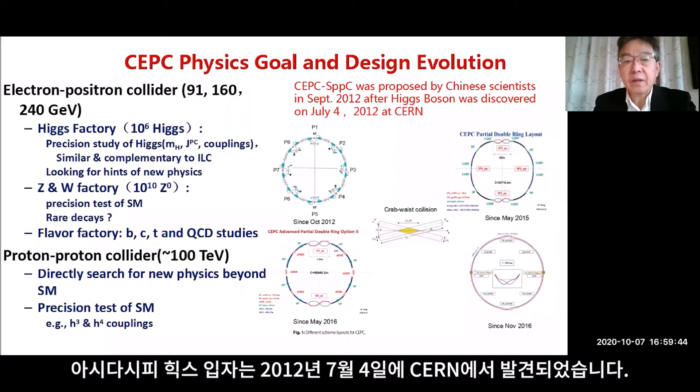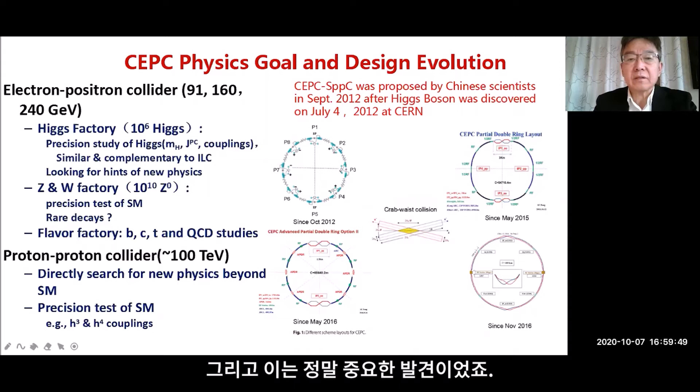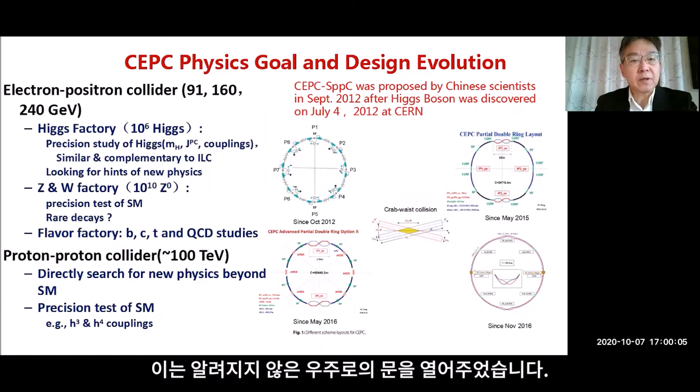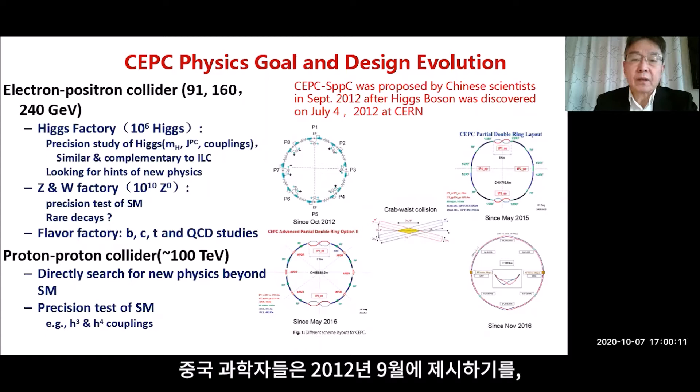As you know, the Higgs boson was discovered on July 4, 2012, at CERN. This is a very important discovery. The Higgs particle permits us to study not only the physics within the Standard Model, but also beyond the Standard Model. Higgs opens a window to the unknown universe.